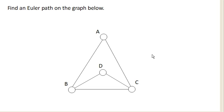So we want to find an Euler path on this graph. Now an Euler path is a path, and remember, a path means that it goes from one point to another, not necessarily returning to the same point.